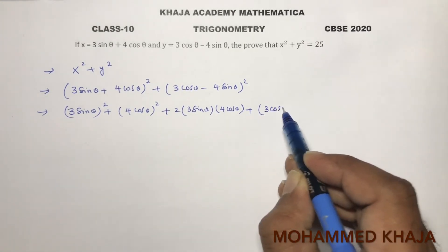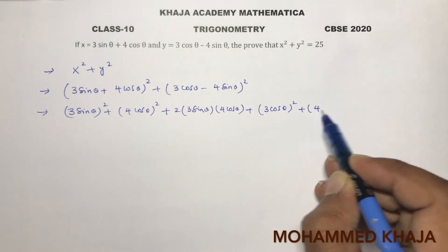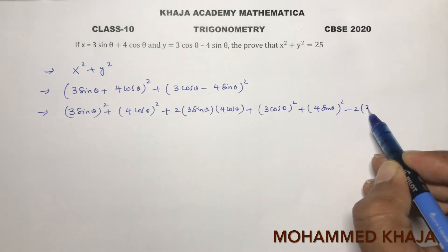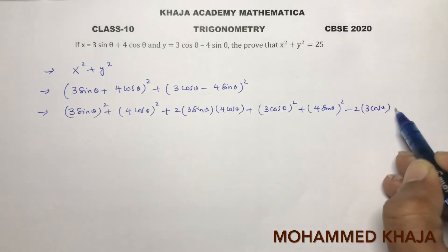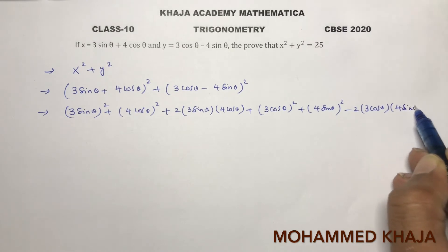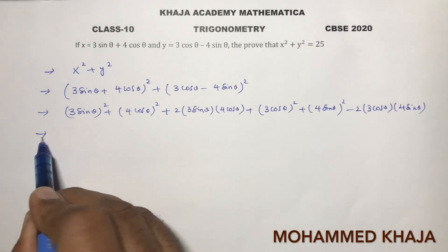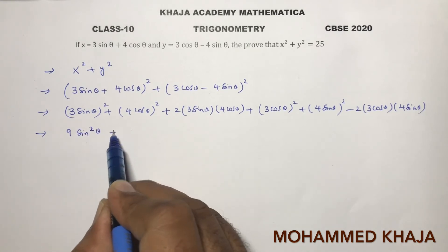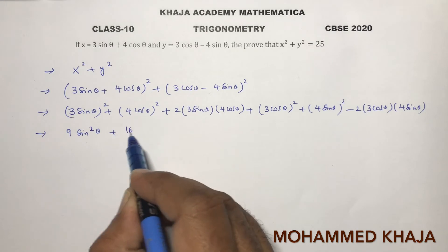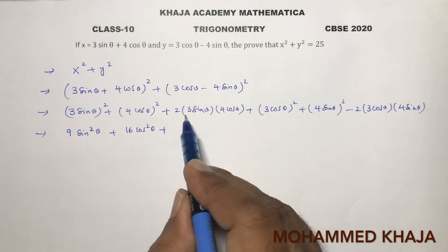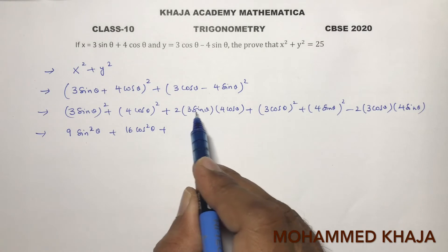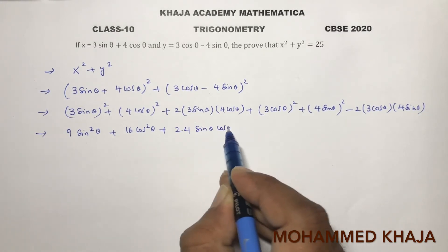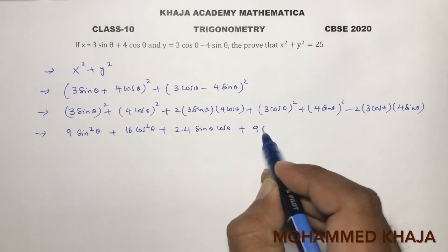And y squared is in the form of (a - b) whole square: a squared, which is (3 cos theta) squared, plus b squared, which is (4 sin theta) squared, minus 2ab, which is 2 into 3 cos theta into 4 sin theta. Now (3 sin theta) squared is 9 sin squared theta, plus (4 cos theta) squared is 16 cos squared theta, plus 2 into 4 sin theta cos theta. And (3 cos theta) squared is 9 cos squared theta.